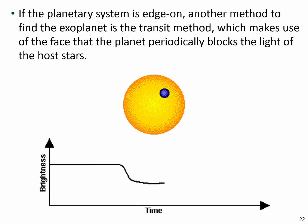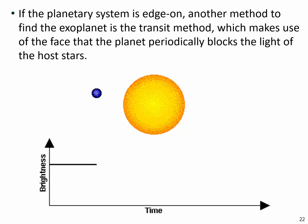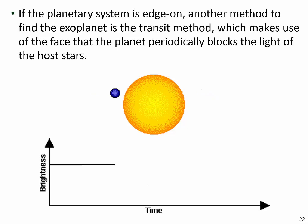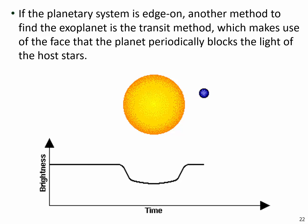While we are on the topic of exoplanets, let me also explain another way to detect them. If the exoplanet's orbital plane is edge-on — meaning we are looking at its edge — the exoplanet could pass in front of the star, between the star and us. In that situation, the exoplanet will block the light of the star. That's what we call the transit method. Most of the over 3,000 exoplanets we have already found were discovered using this method.